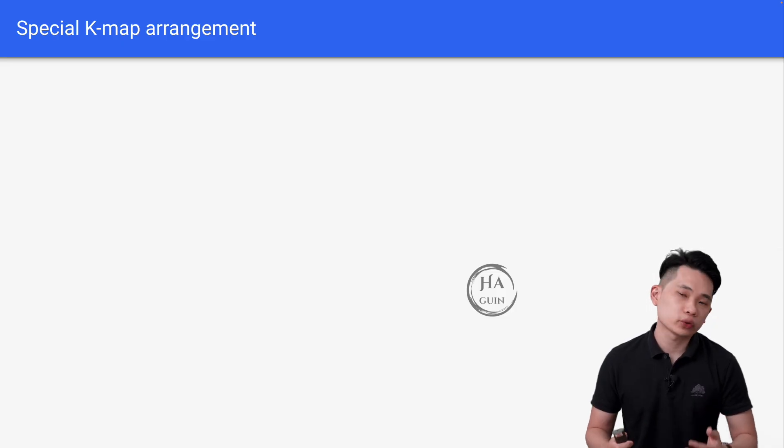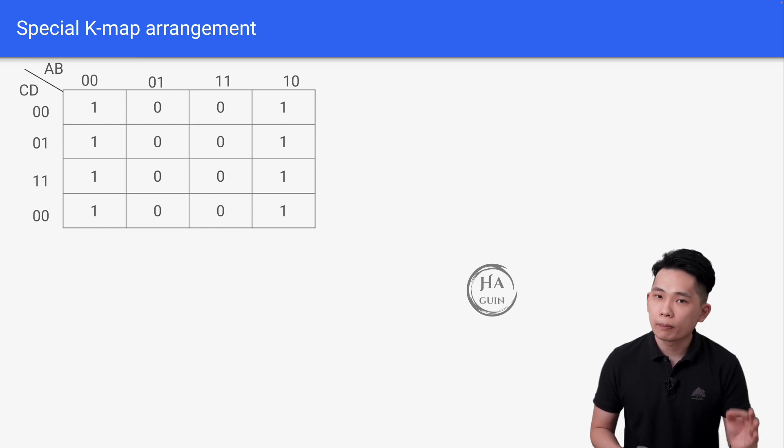Before we end, let's look at some special K-maps arrangement. The first example would be this one here. Combining the left and right will result in Z equals not B here.